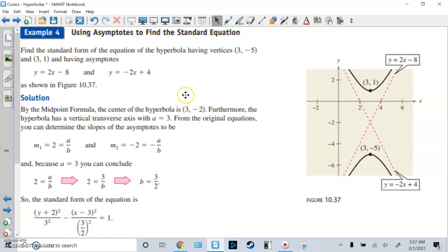Also, we figured out that the hyperbola is vertical and has a transverse axis with a equals 3, because that's how far it is from the center. Then using the original equations, we know the slope, positive 2 and negative 2. Remember, the slope is equal to a over b if it's vertical. So we know a, so 2 equals 3 over b. Solve for b, you get 3 halves. And you could also do it for the second one, where the negative slope equals negative a over b. Solve for b, you get 3 halves.